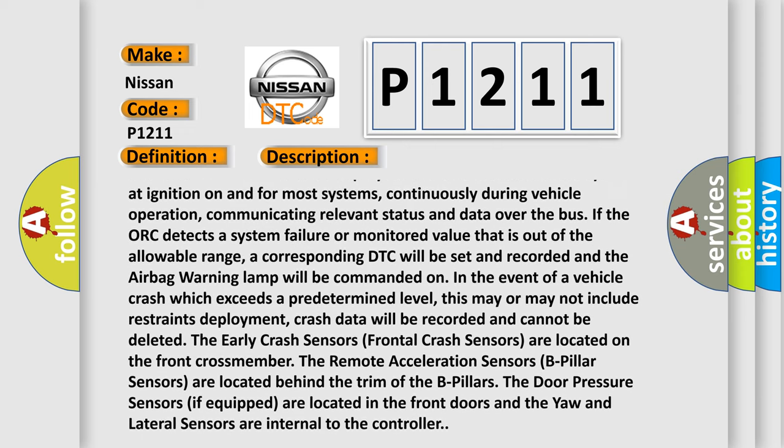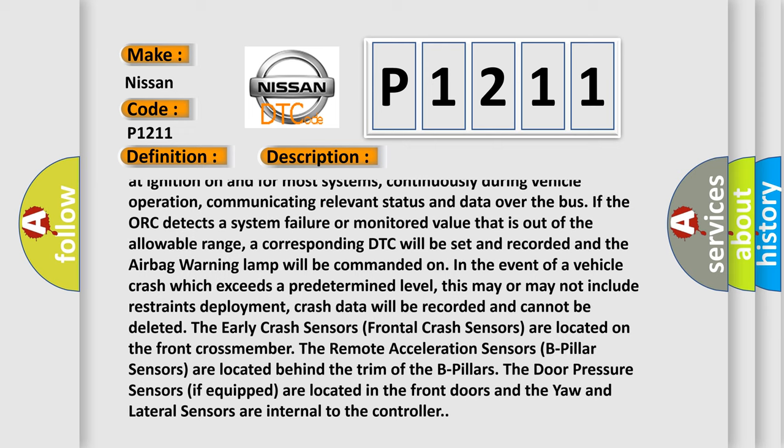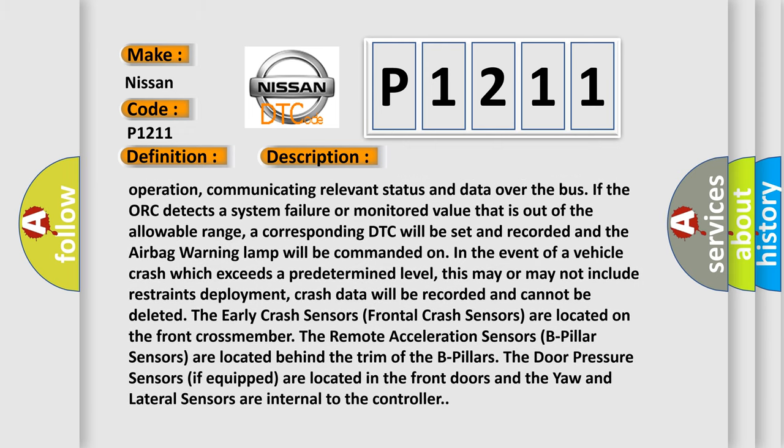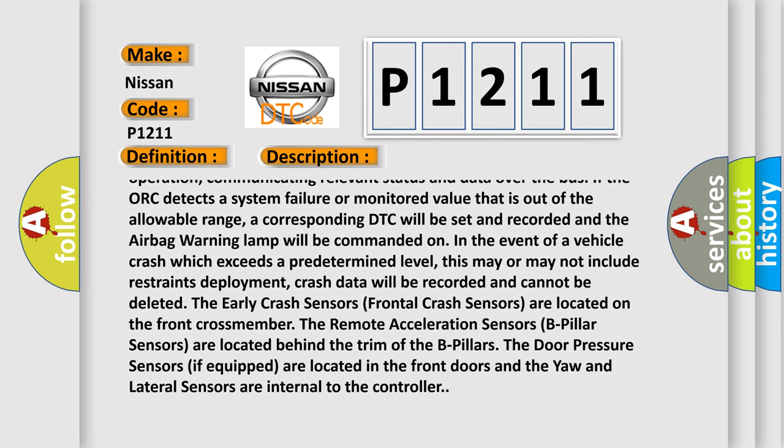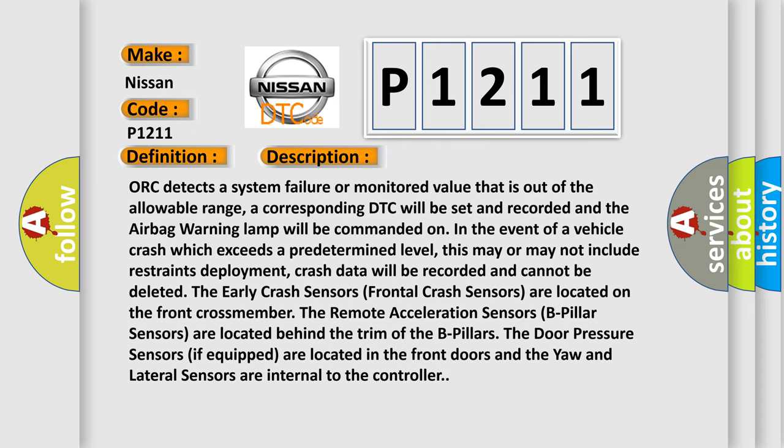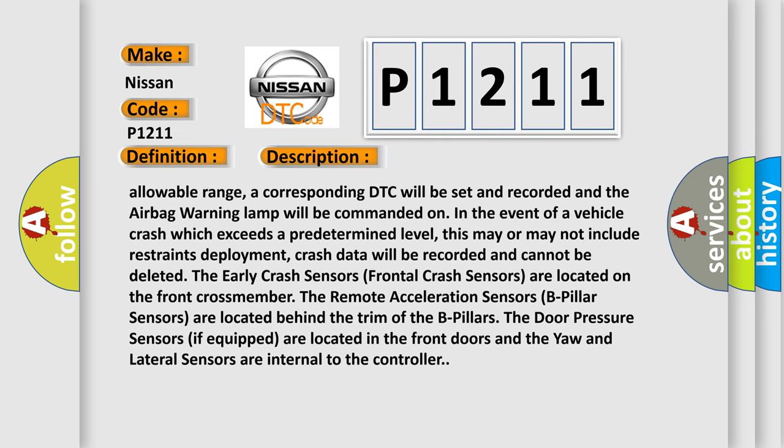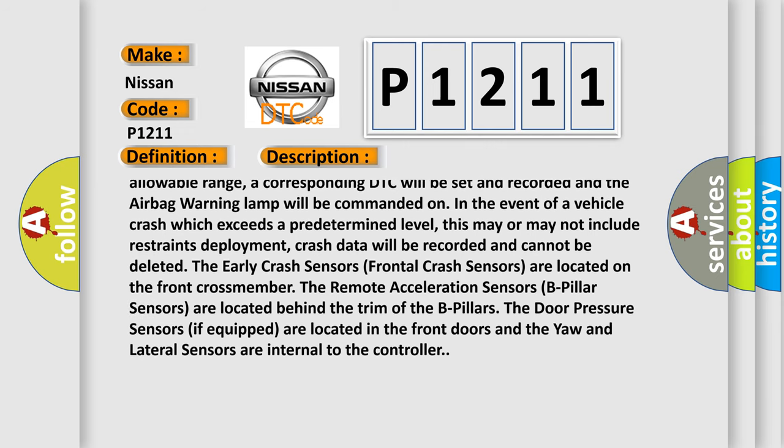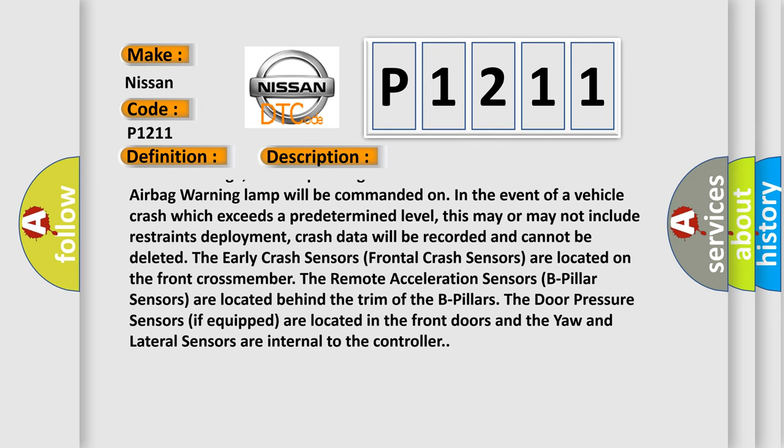If the ORC detects a system failure or monitored value that is out of the allowable range, a corresponding DTC will be set and recorded and the airbag warning lamp will be commanded on. In the event of a vehicle crash which exceeds a predetermined level, this may or may not include restraints deployment, crash data will be recorded and cannot be deleted.